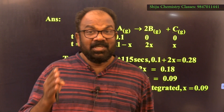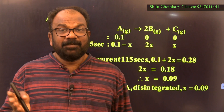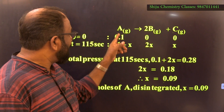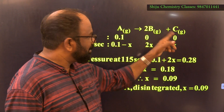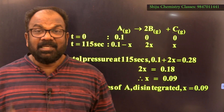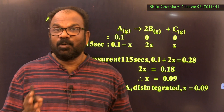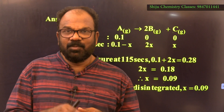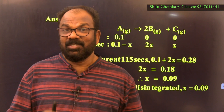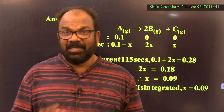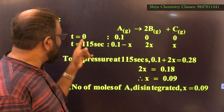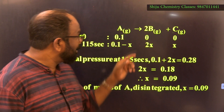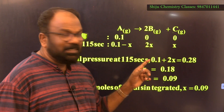For the first order reaction A(g) → 2B(g) + C(g), the initial pressure of A is 0.1 atm. Since pressure is directly proportional to number of moles, we take the initial moles of A as 0.1 at t = 0. At that time, B and C have not formed, so their moles equal 0.